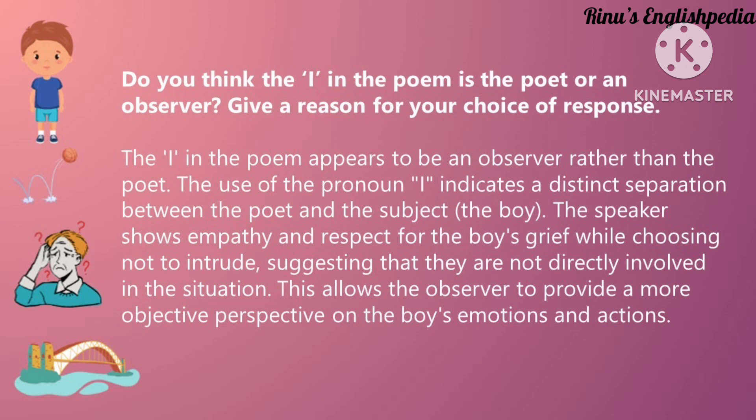The first question is: Do you think the 'I' in the poem is the poet or an observer? Give a reason for your choice. When we read the poem, we see that 'I' is describing a child, so 'I' becomes an observer. When 'I' is used in a poem, it shows a distinct separation between the poet and the subject of that work. The subject of this poem is the boy who is going to face a loss, and 'I' is used to describe the narrator — the poet.